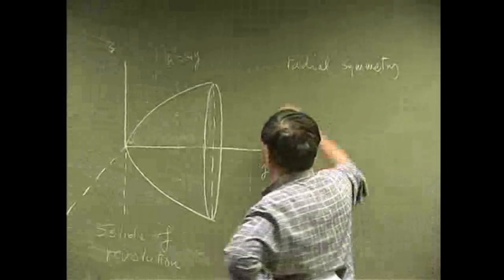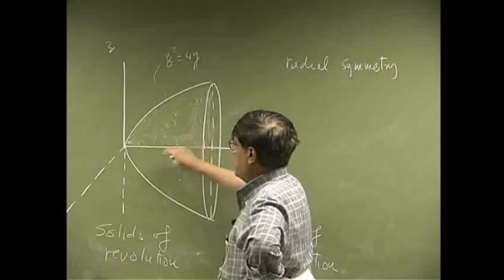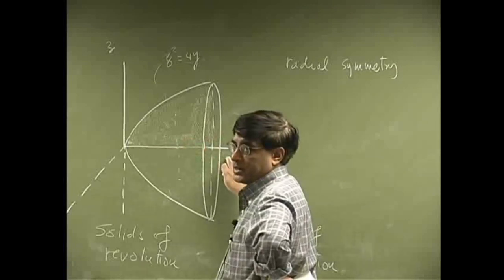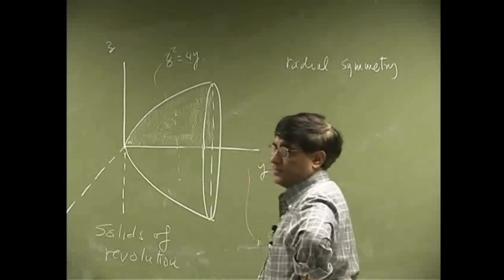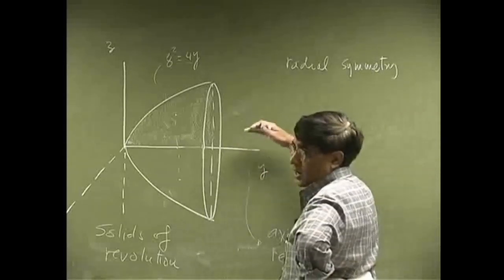So, since we have a radial symmetry, the centroid of this solid has to be on y-axis. And that's all the conclusion is, that because the way the solid is generated.